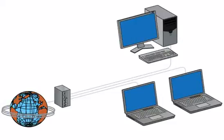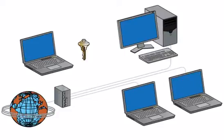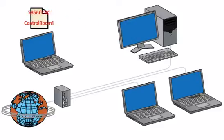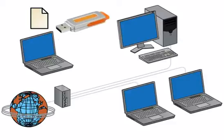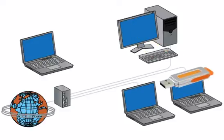If Internet access is available in your facility, but not available from the computer where you want to install a new activation file, you can use the FactoryTalk Activation Manager to download an activation file to the computer with Internet access, and then move the activation file to the computer where it is needed. During this procedure, you will produce a data file containing host IDs and the names of all non-networked computers requiring activation files. You will need a USB drive or other removable media to transfer the collected host IDs to a computer with Internet access, from which the activation files will be created.